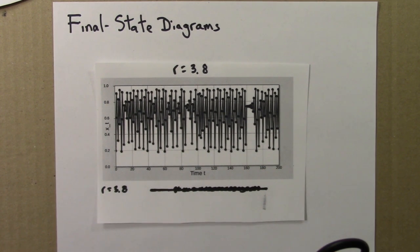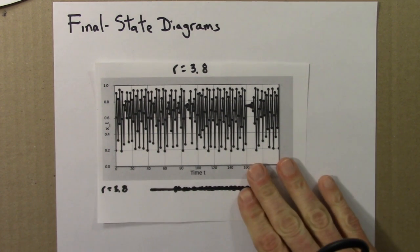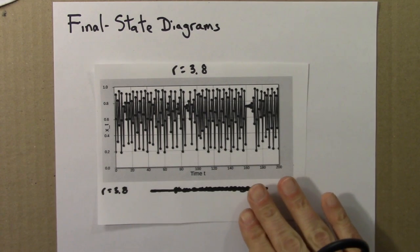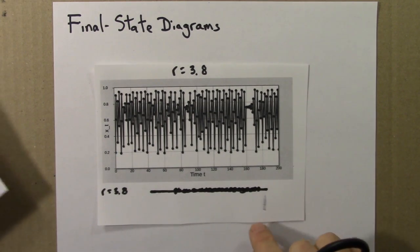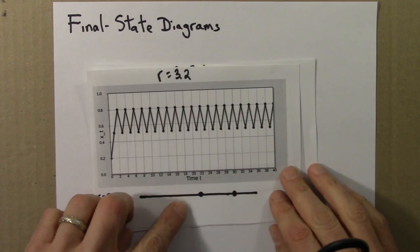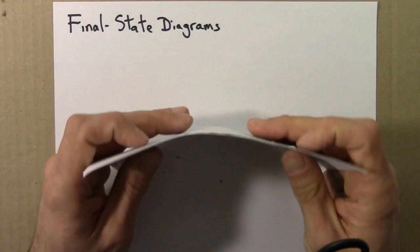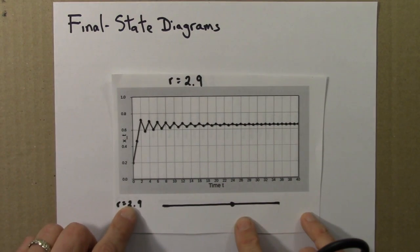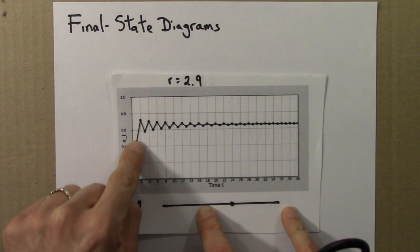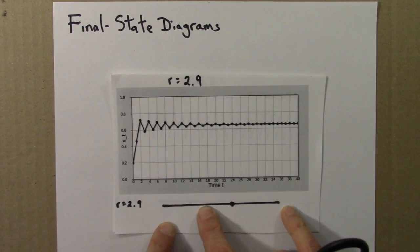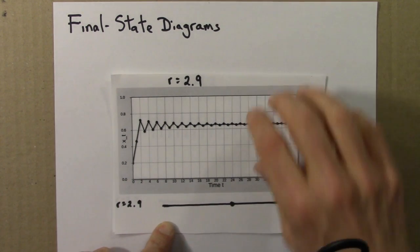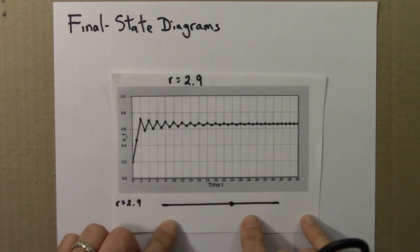So these are the phase lines, excuse me, not the phase lines, the final state diagrams for three different R values. They're like phase lines, but they're different because they don't have arrows on them. And the reason they don't have arrows is that, unlike for differential equations, for these iterated functions, there can be oscillations. So this one for 2.9, it wiggles back and forth. So it overshoots, undershoots, overshoots, undershoots. So anyway, we're just drawing the final states, we're not putting arrows on them.